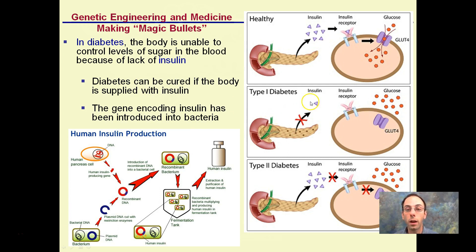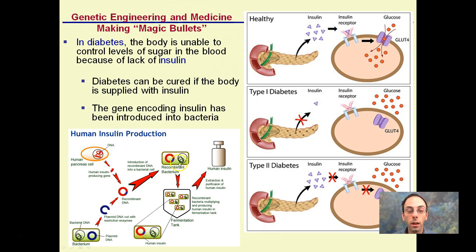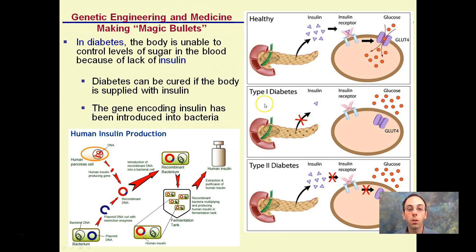If we just supply insulin, we can correct this situation. The gene encoding for insulin has been introduced into bacteria through recombinant DNA, enabling bacteria to produce human insulin that can then be added to patients — correcting especially Type 1 diabetes, where insulin is not being produced.